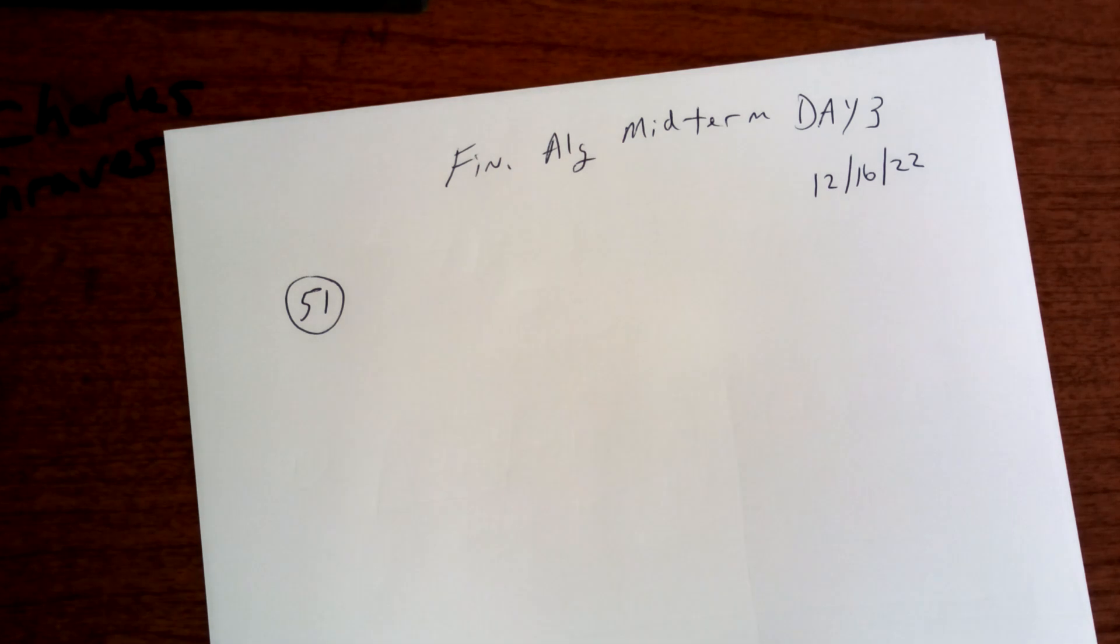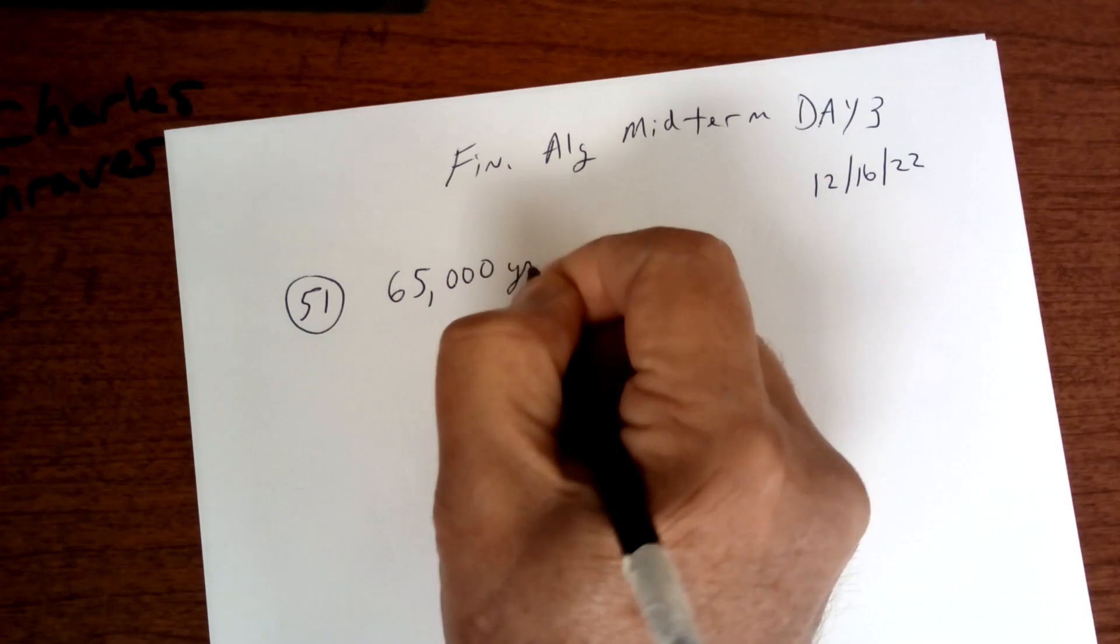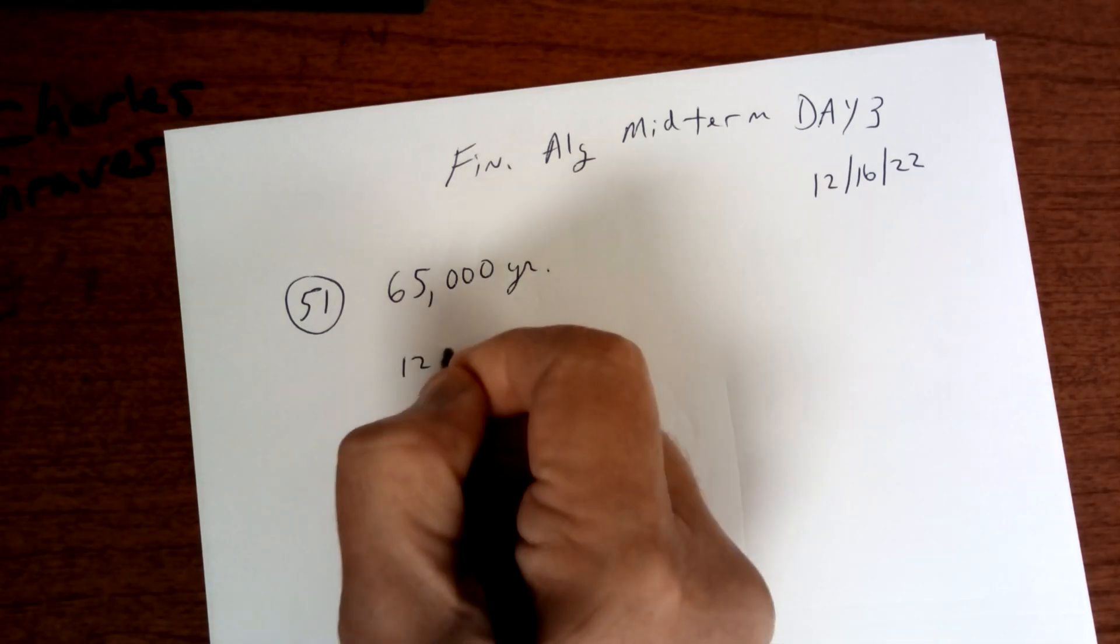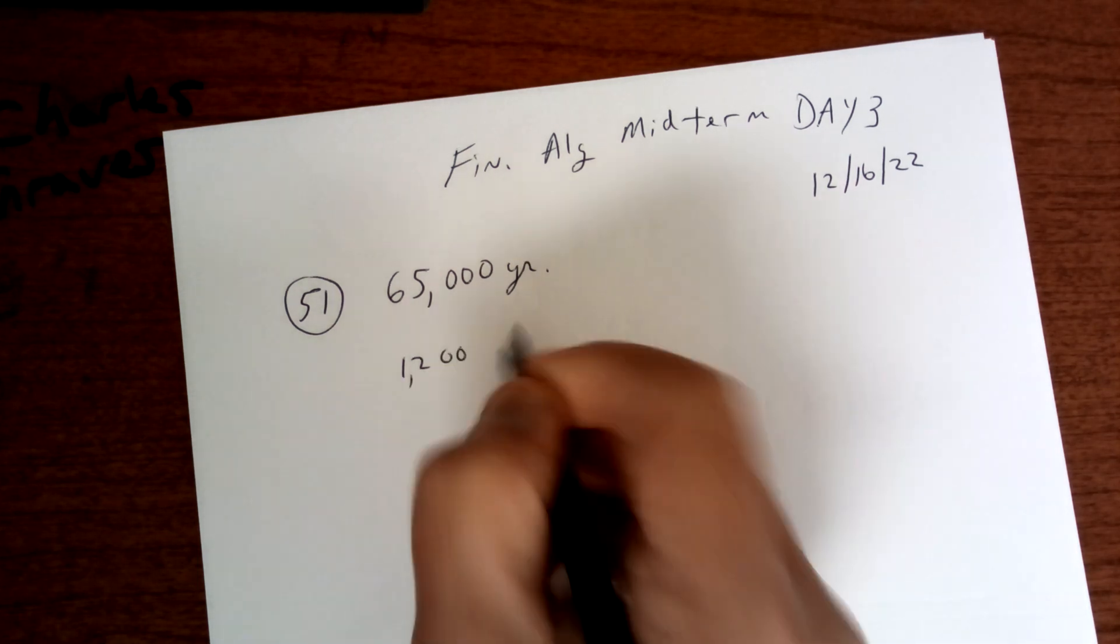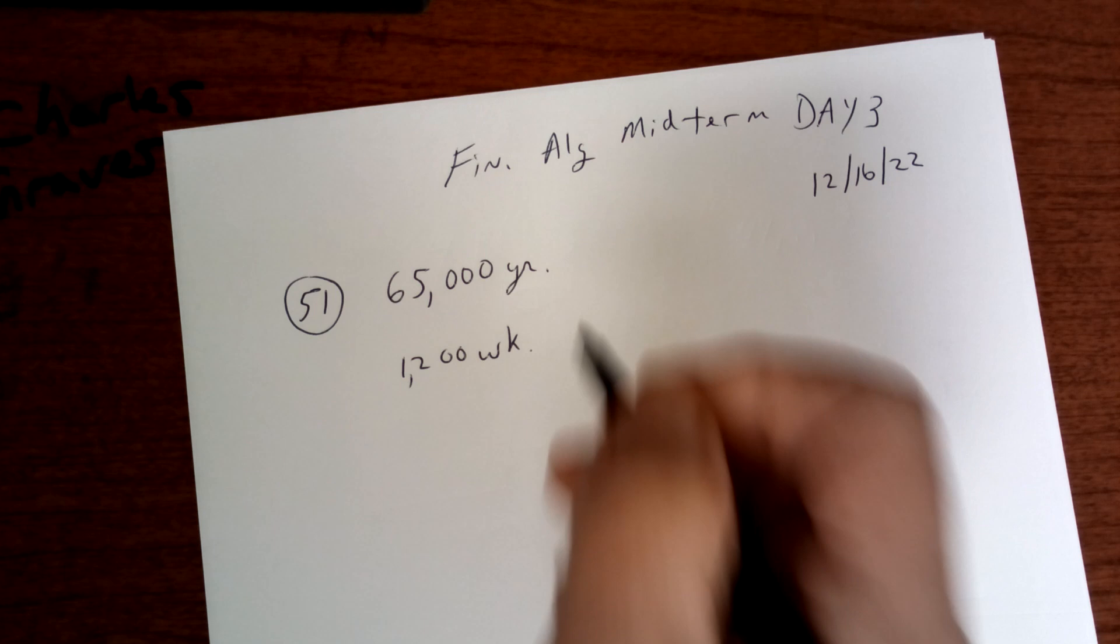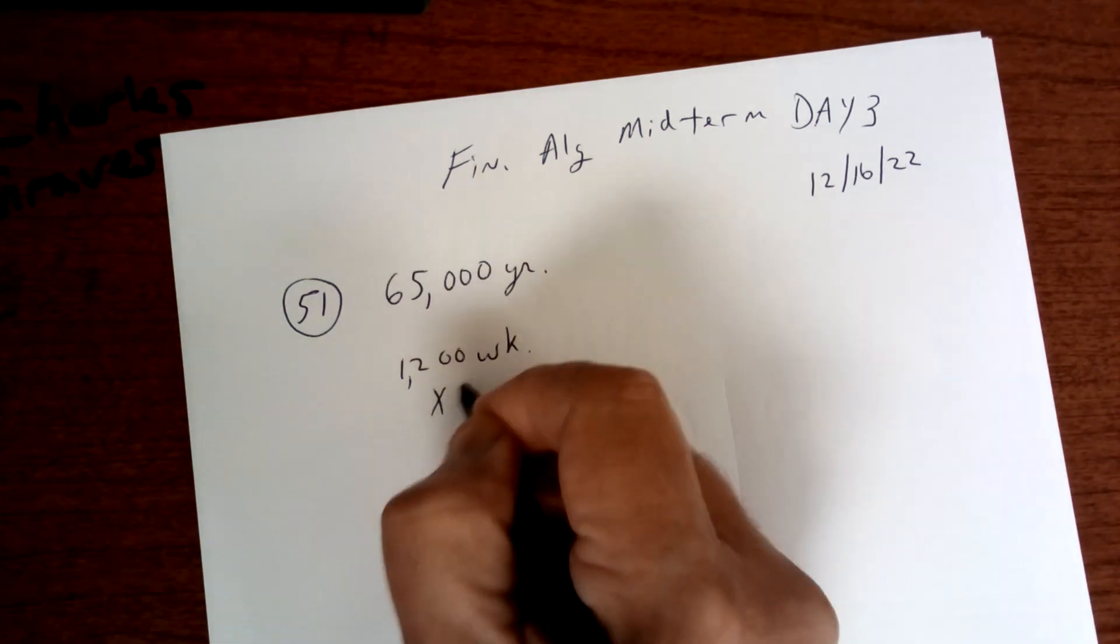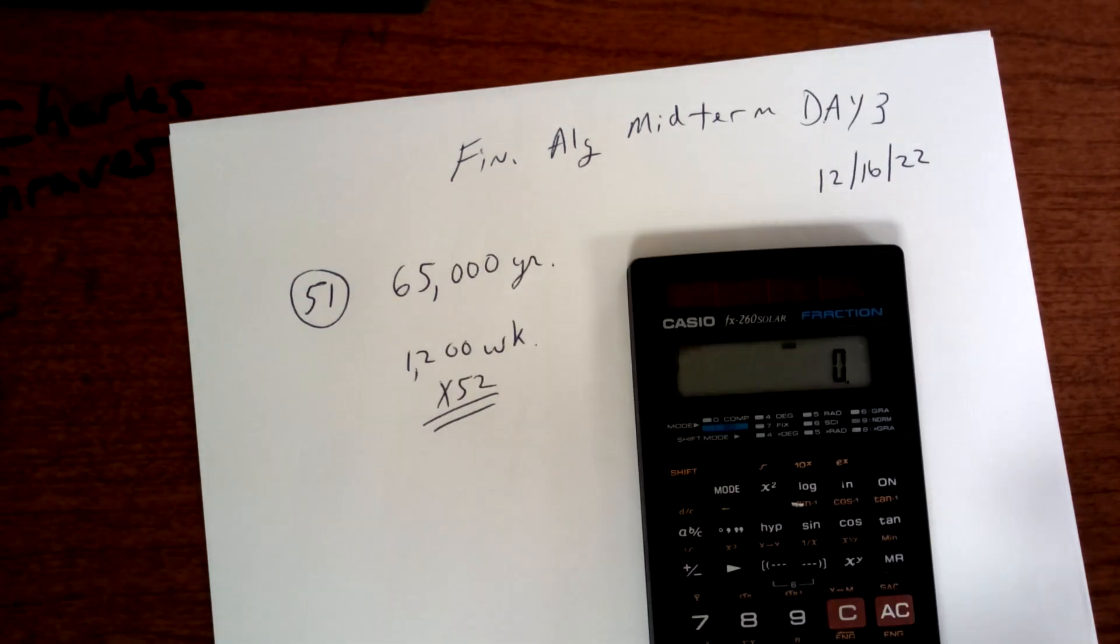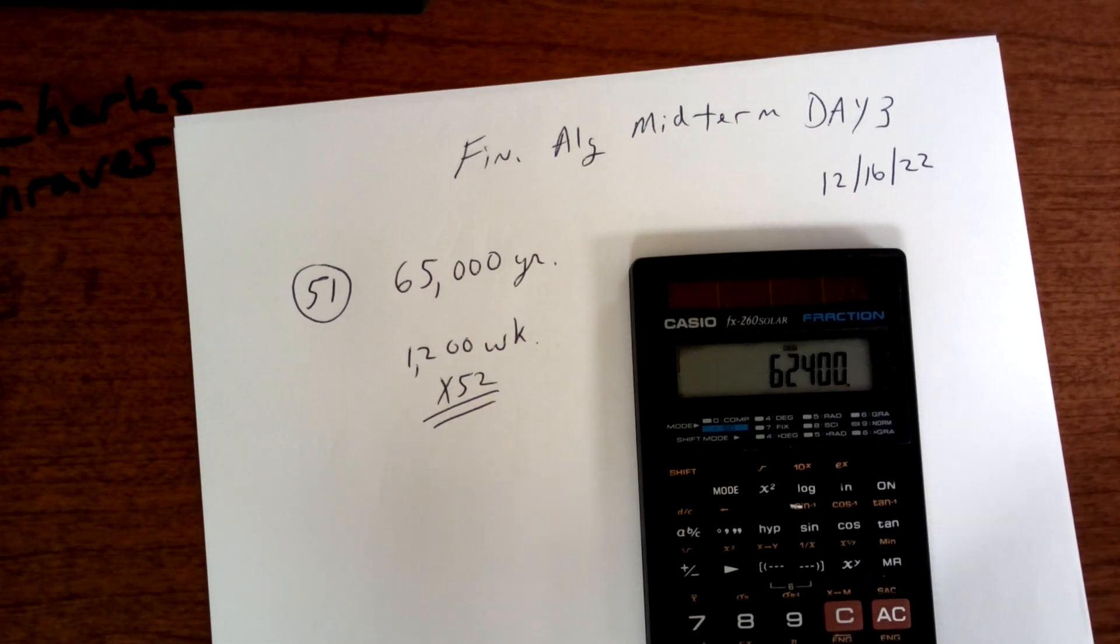Jim's offered a job as a computer programmer at $65,000 per year. Another company offered him $1,200 a week. Which one is the better job? Well, this one, there's 52 weeks in a year, so you've got to multiply by 52. So $1,200 times 52. He's better off going with this one.